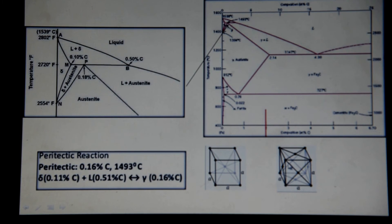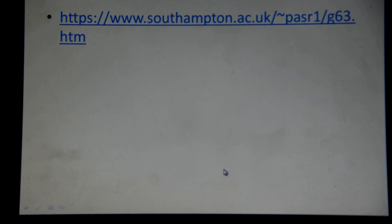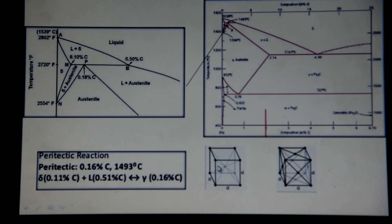But for the body centered cubic, you have a lattice point in the center, and then you have these other lattice points on the edges.